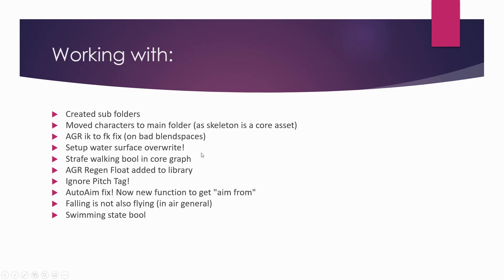There is a new bool value in the main graph which is called strafe walking. To our library I've added the regeneration float, one of the functions we made in the previous ability tutorials. There is also a new animation modification tag which is 'ignore pitch', and that means that any aim offset will basically just ignore pitch - so that's very good for top-down games where you don't want your character to aim up and down.